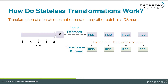A stateless transformation is stateless precisely because it doesn't depend on any other batches in a D-Stream. As we can see here, the input stream is divided up into four RDDs. Those are run through some stateless transformation, and we have a transformed D-Stream, which is also composed of four RDDs. There's a one-to-one correspondence between each one of those output RDDs and the input RDD in the D-Stream from which it was transformed.